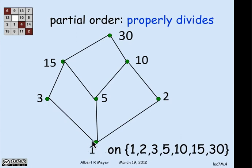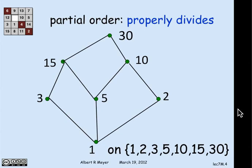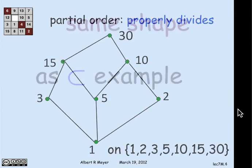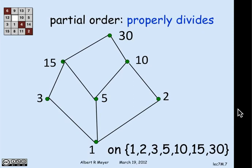And now, there's a path from 5 to 30, because 5 is a divisor of 30, and it's not equal to 30. It's a proper divisor of 30. And of course, the point of this picture is to show that the proper divides relation on these seven numbers has exactly the same shape as the proper subset relation on those seven sets.